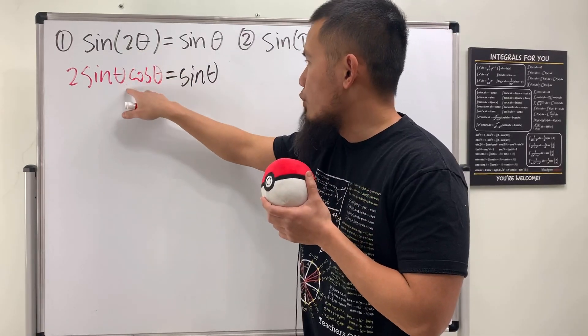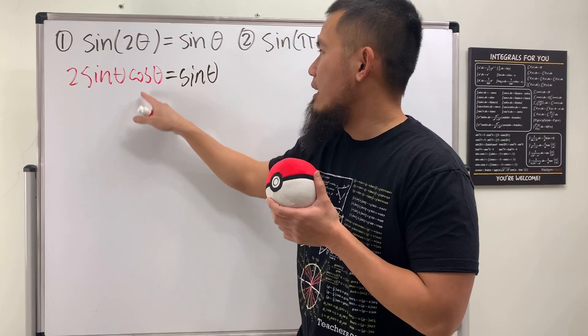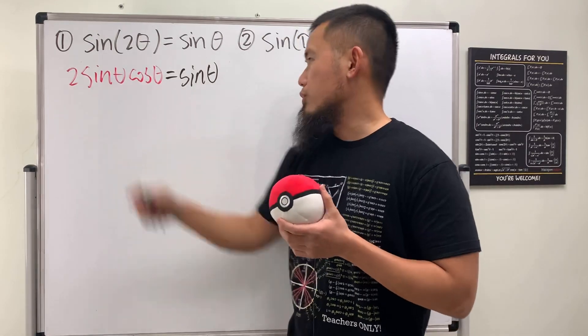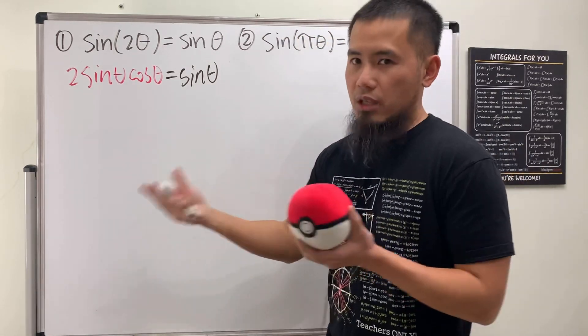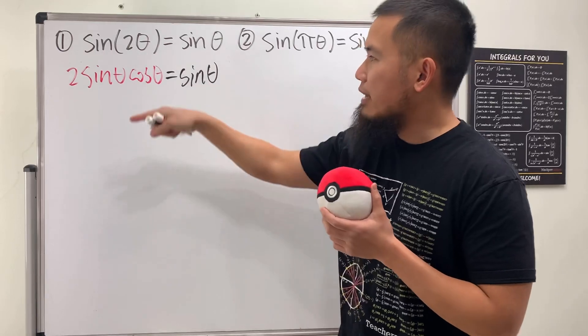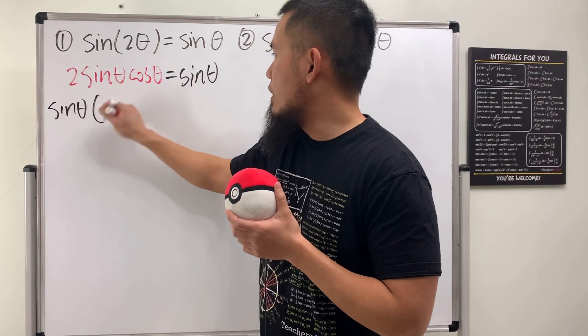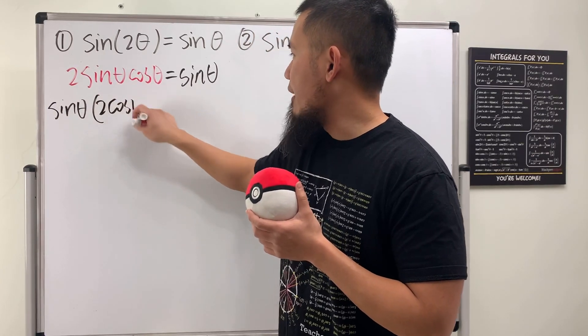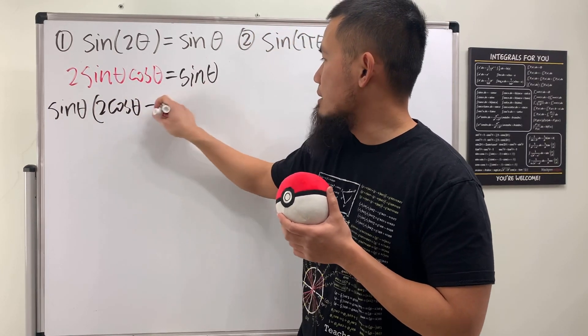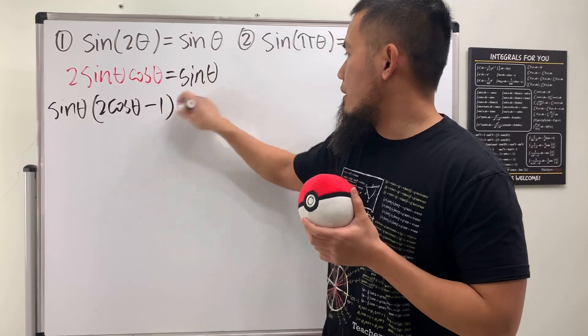That's why we use the double-angle identity right here, so that we have sine theta, cosine theta right here, and also the two in front, of course. And now we can just continue. Bring the sine to the other side, factor it out. So we get sine theta here, and then this right here will give us 2 cosine theta, and then this to the other side becomes minus 1, right? That's equal to 0.